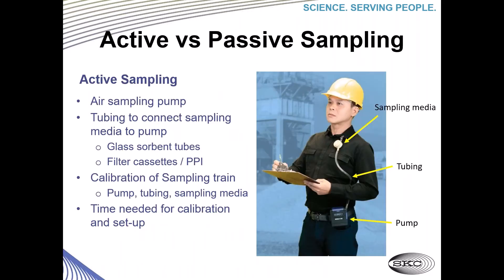Before jumping into products and applications, I want to make sure everyone understands the difference between passive and active sampling. Active sampling involves pulling air through the sampling media using an air sampling pump, tubing to connect the sampling media to the pump — whether glass sorbent tubes, filter cassettes, or in this picture a PPI parallel particle impactor — and you would also need to calibrate the sampling train by connecting the pump, tubing, and sampling media to make sure you're reaching the required flow.